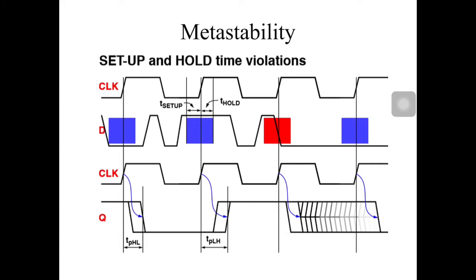In the timing diagram, the setup time is defined as the time the data needs to be high before the clock turns high, and the hold time is how long the data still needs to remain on after the clock has reached the high value. The time from the clock to the output is the propagation delay, also known as T clock-to-Q. When D is low, the setup time and hold time regions are marked around the clock transition.